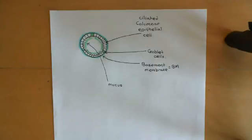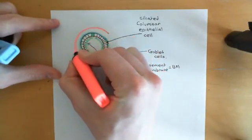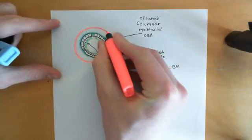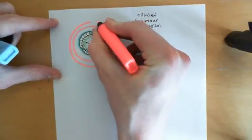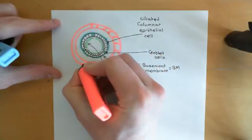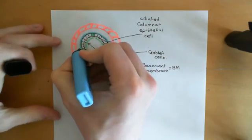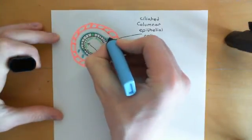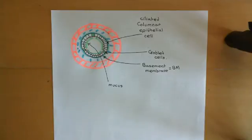Underneath the basement membrane, you have a layer of connective tissue known as the lamina propria. Outside of the lamina propria, you then have the bronchial smooth muscle cell layer. The lamina propria is just the gap between the basement membrane and the smooth muscle cell layer around the outside. The lamina propria is going to be a really important site where a lot of the pathophysiology of asthma is going to occur.